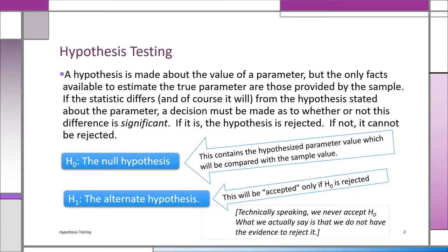Now let's learn some of the language of hypothesis testing. There's a claim about a parameter. The actual claim we're going to call the null hypothesis, H-zero — that's where we put the hypothesized parameter value, which will eventually be compared with the sample value. Then we have H1, called the alternate hypothesis, which is only accepted if you reject H-zero.